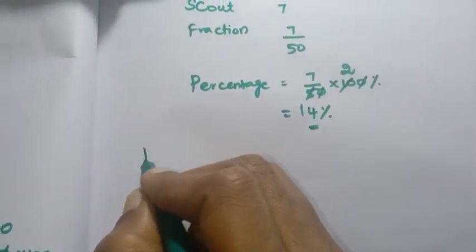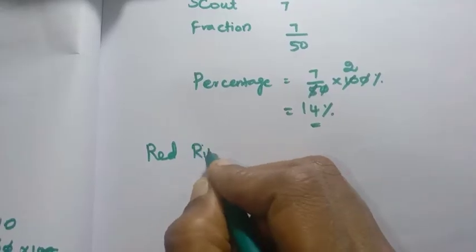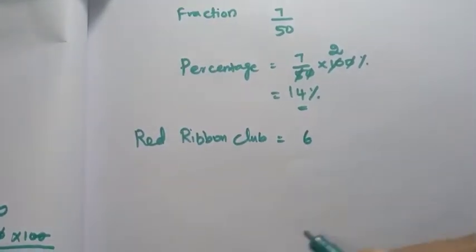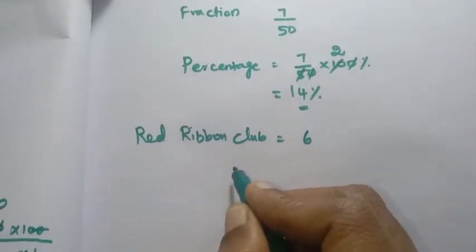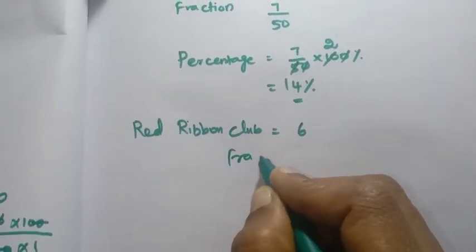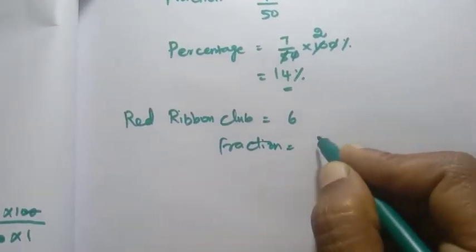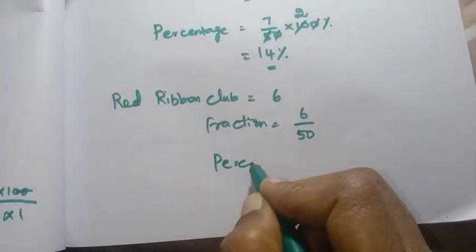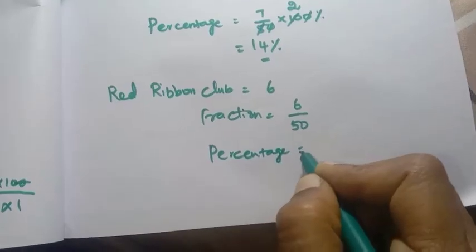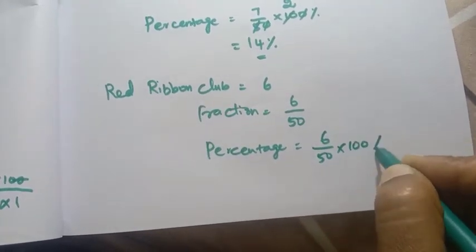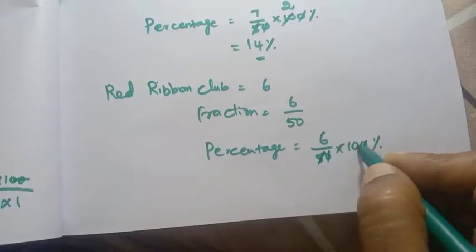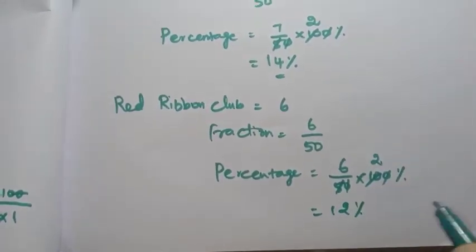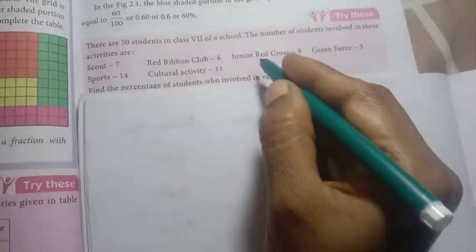Red Ribbon Club has 6 students. Percentage = 6 by 50 into 100. Cancel zeros: 5 twos are 10, 6 twos are 12 — so 12 percentage.